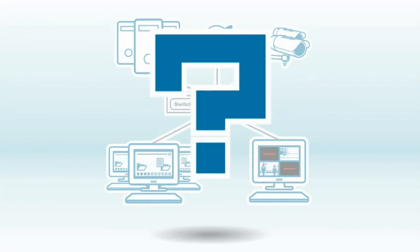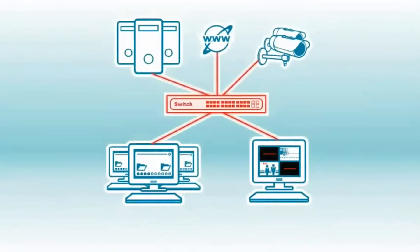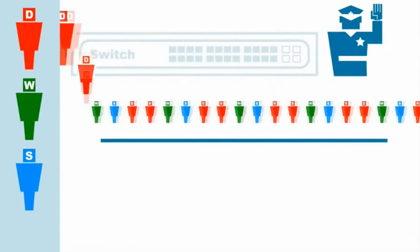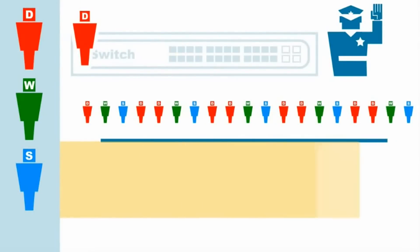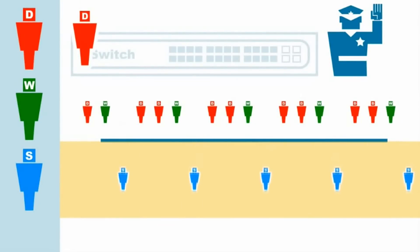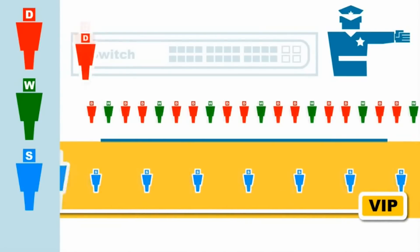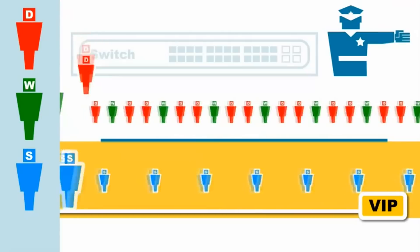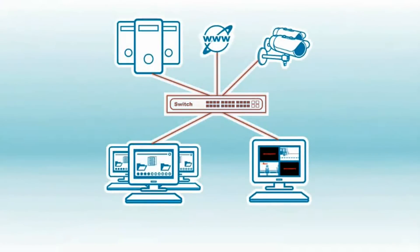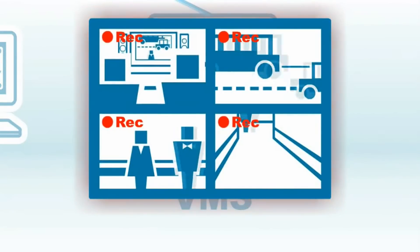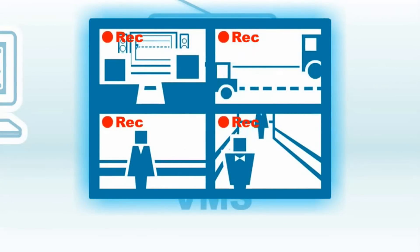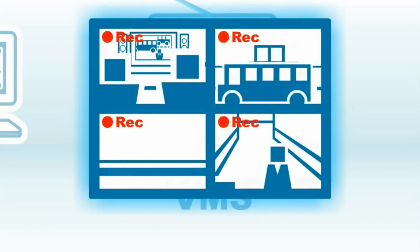So what can we do to fix this? First, we can create a surveillance VLAN to separate surveillance traffic from normal traffic. Next, we use QoS to set our surveillance VLAN traffic as high priority to ensure that it gets priority over normal traffic. This ensures that your surveillance traffic is delivered in a timely manner, even during periods of heavy traffic, allowing your video to stream smoothly without interruption and creating a reliable surveillance network.